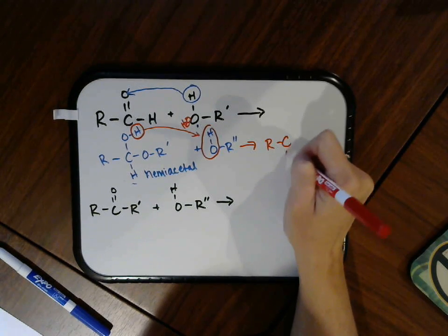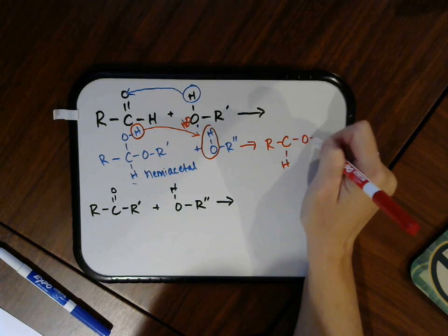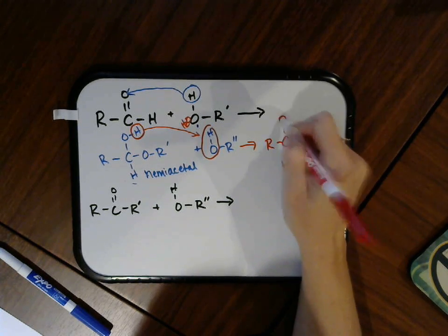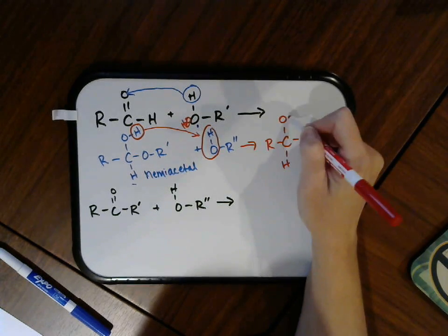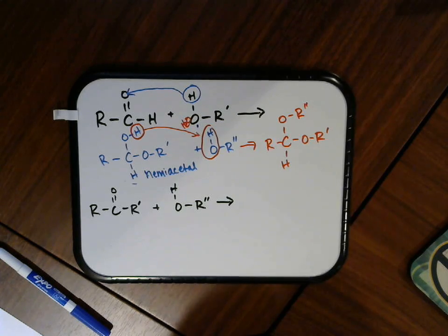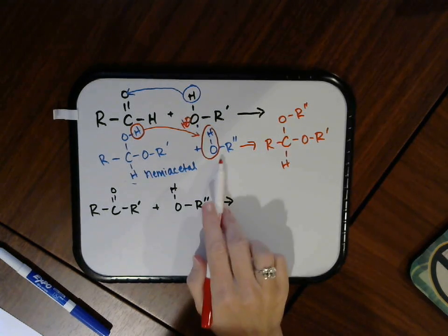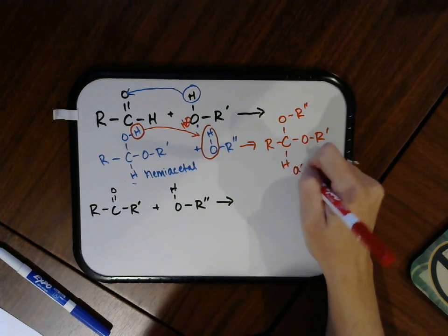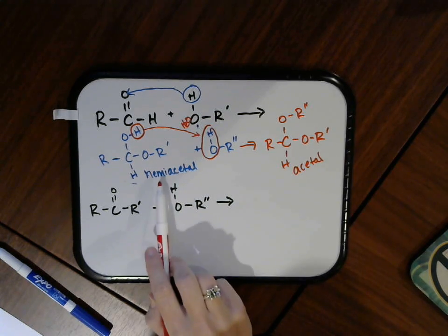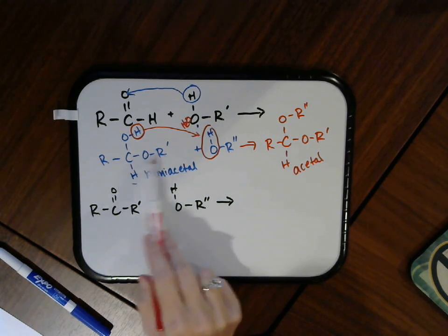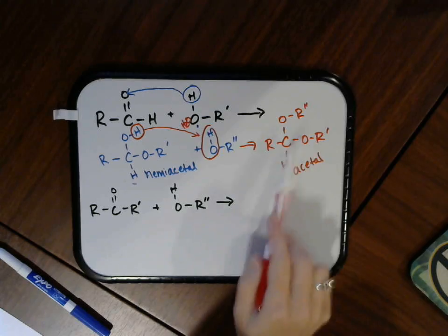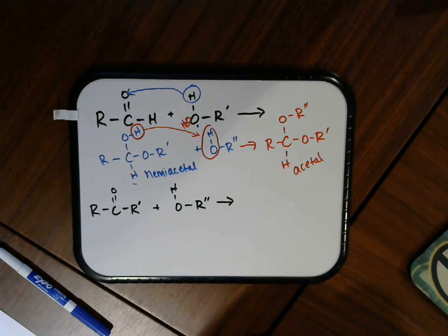So my product would be, let's put what we had already there. There's my oxygen there. It's going to now bond to that other alkyl group that was on the alcohol right here. And this is the acetal. The complete acetal has two of the OR groups right there.